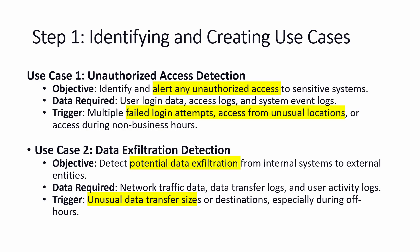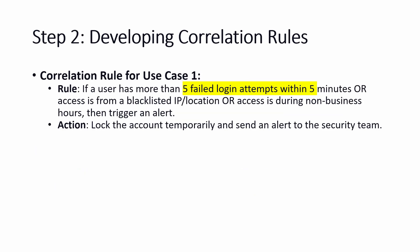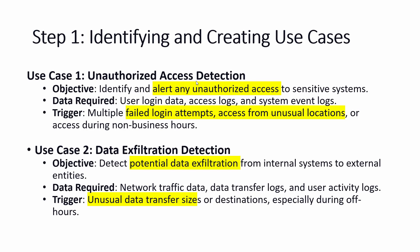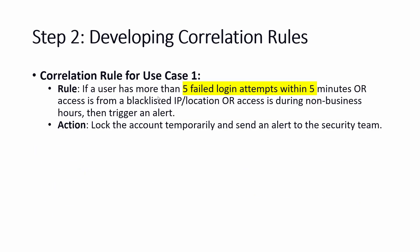The second use case is data exfiltration detection — meaning data should not leave the organization going from internal to external. The objective is to detect potential data exfiltration from internal to external. Data required includes network traffic data, data transfer logs, and user activity logs. Triggers include unusual data transfer size — for example, if someone tries to send more than 5 MB of data, the SIEM should generate a log — especially transfers to unusual destinations or during off-hours. Based on these use cases, we then develop the correlation rules.